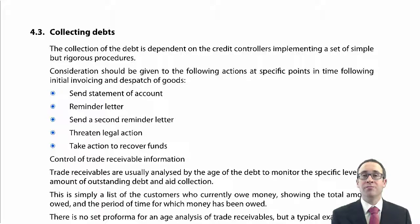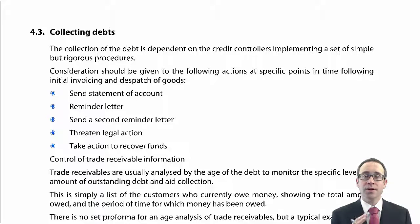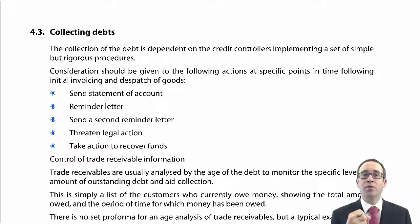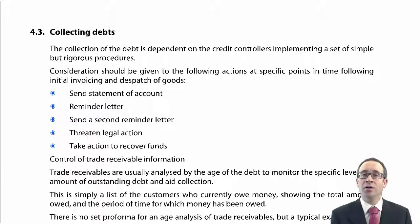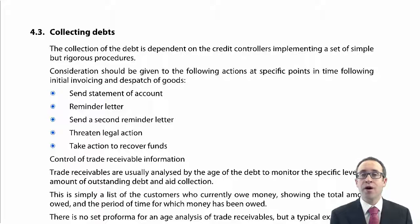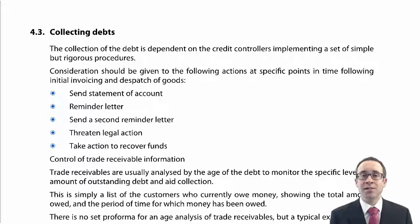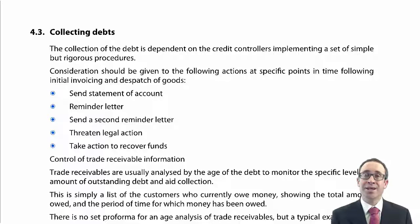That covers the qualitative section of the notes — looking at whether we offer credit, the specific terms, and how we manage cash collection. There could be one or two non-computational questions on receivables collection. Next, we will look at the numerical aspects: the interest we incur on our receivables, settlement discounts we offer and their impact on the financials, and also the world of invoice discounting and factoring.